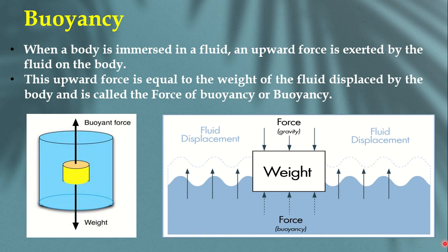So when you throw any body into water, the fluid will exert some force on it. The upward force exerted by the fluid on the body is called the buoyancy force. Gravity force (weight) and buoyancy force are always opposite to each other — weight acts vertically downwards whereas buoyancy force acts upward, trying to push the object upwards.